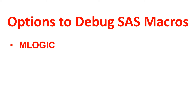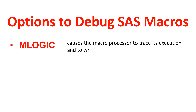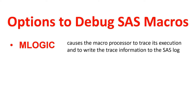Let's have a look at MLOGIC's definition. It says: this causes the macro processor to trace its execution and to write the trace information to the SAS log. As I just showed you, it was showing what parameter is passing and what value.